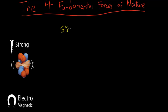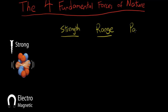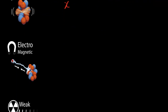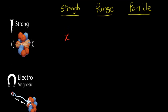Let's create some categories to compare these forces together. Our first category is strength, just to give us a feel of how strong they are relative to each other. Next is range, and then the force carrier particle that mediates that force. For the strength of the strong force, let's call it X — and for each of the following forces, I'll make their strength relative to X.